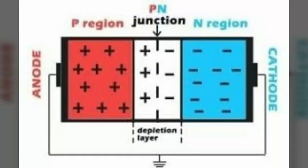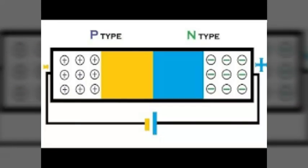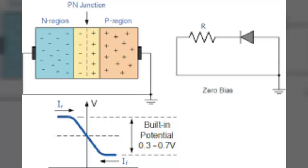Once the P-N junction is formed and the depletion layer is created, the diffusion of free electrons stops. The depletion region acts as a barrier to the further movement of free electrons across the junction. The positive and negative charges set up an electric field, and there exists a potential difference across the depletion layer called barrier potential. The barrier potential of a P-N junction depends upon several factors including the type of semiconductor material, the amount of doping, and temperature.